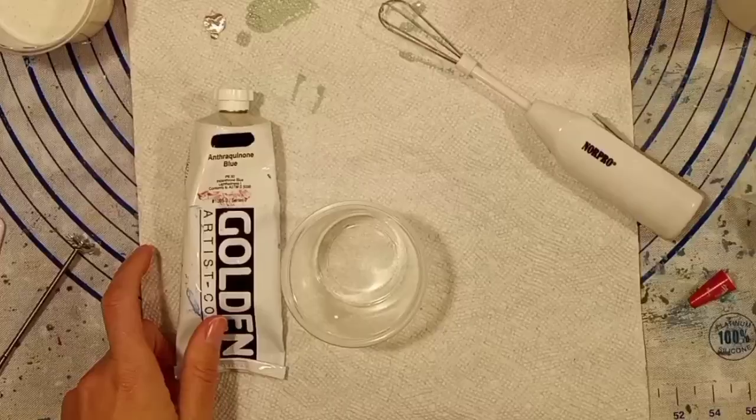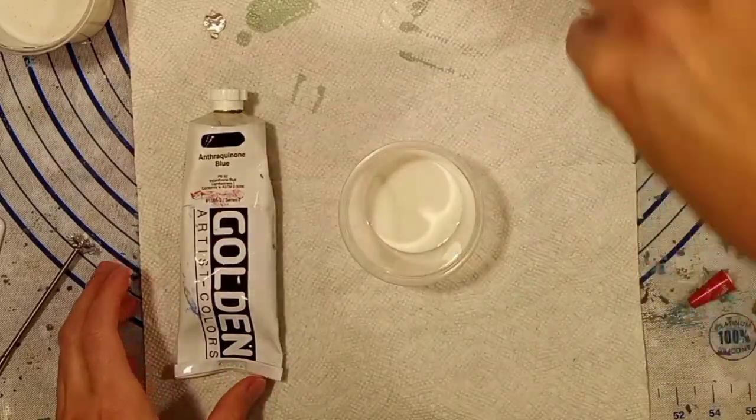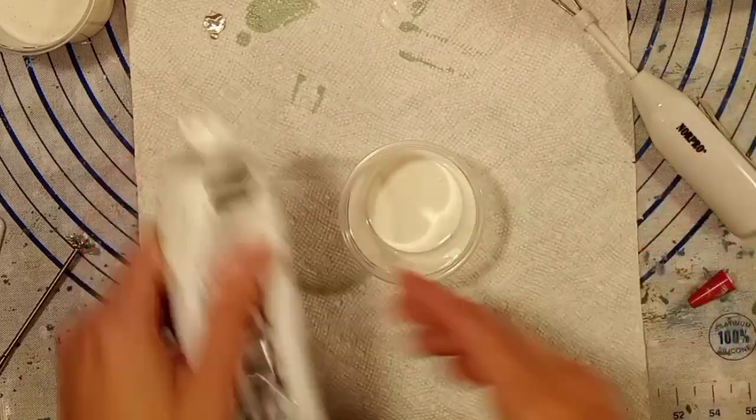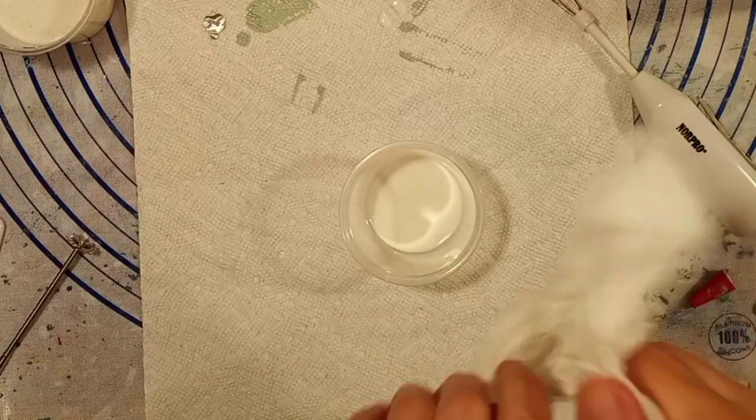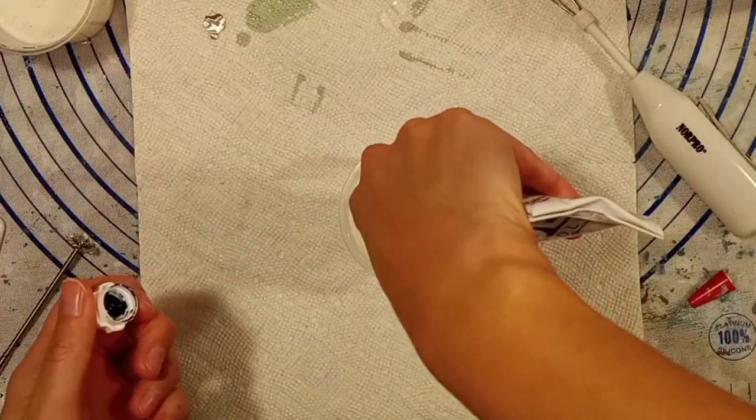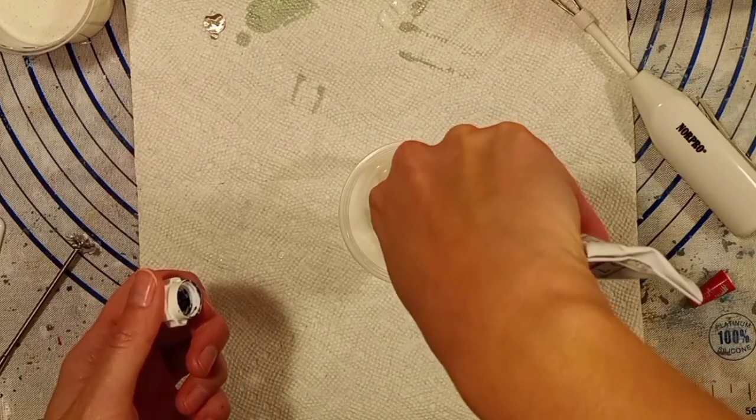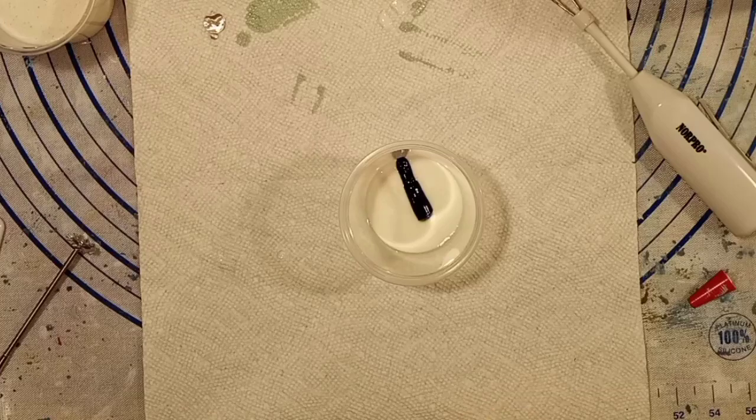I don't know what each one of them does, but I mainly use the metal whisk part and then also the little plastic one. The golden anthroquinone blue has been really hard for me to get the cap open and also to mix into the Floetrol. It takes a lot of work to get that mixed in thoroughly, so I figured this would be the ultimate test.